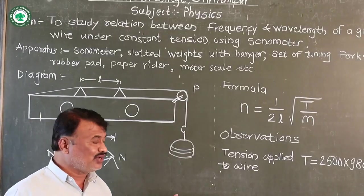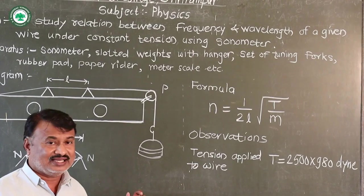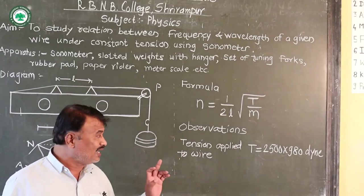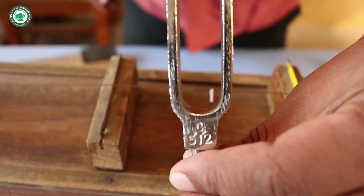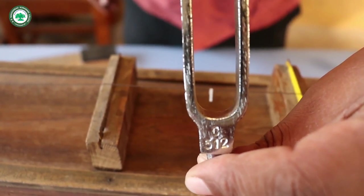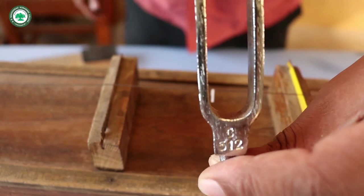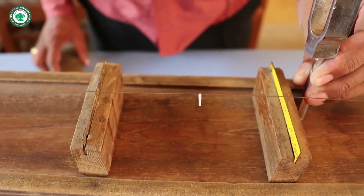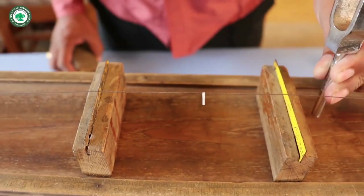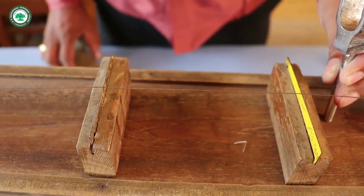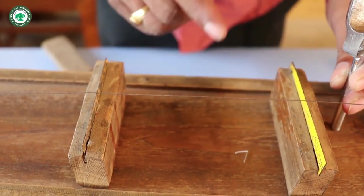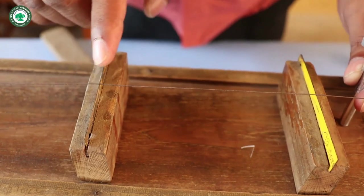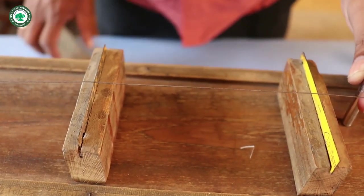During this experiment we apply constant tension in the wire; the tension applied is 2500 × 980 dynes. For the tuning fork of frequency 512 Hz, it is hammered on the rubber pad and placed on the surface of the sonometer box. When the antinode is exactly formed at the center of the bridges, the paper rider is thrown off, and nodes are formed at the bridges, confirming the formation of transverse stationary waves.